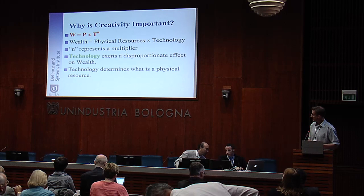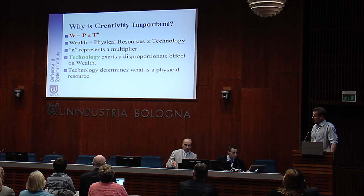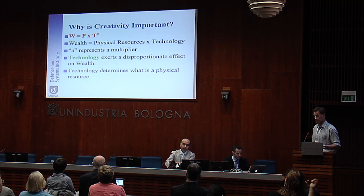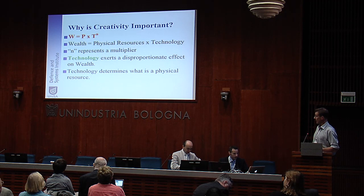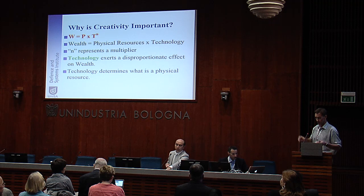I want to do that by introducing you, first of all, to a made-up equation. This was made up by Paul Pilser, who is an economist. He came up with the equation that W equals P times T to the N, to explain the relationship between the wealth of a nation, the amount of physical resources that nation has, and the role that technology plays. Technology, because it's raised to the power of N — assuming N is greater than one — has a disproportionate effect on the wealth of a nation, and therefore a direct relationship to engineering creativity.